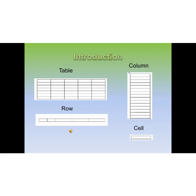What is a table? A table is a grid of cells arranged in rows and columns. Tables are useful for various tasks such as presenting text information and numerical data. A column is a vertical line of characters extending from the top to the bottom of the screen. Likewise, a row is a horizontal line of characters extending from the left to right. The intersection between the column and the row is called a cell.